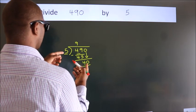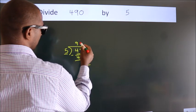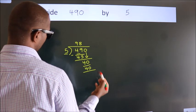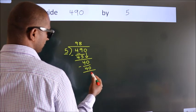When do we get 40 in the 5 table? 5 eights, 40. Now we subtract. We get 0.